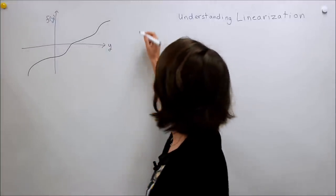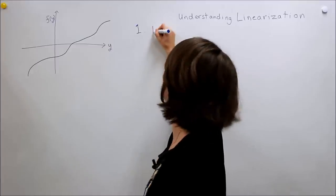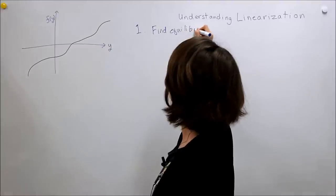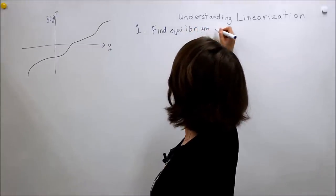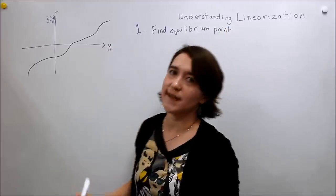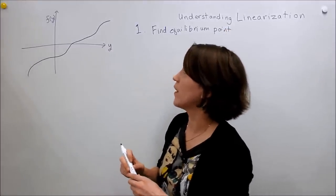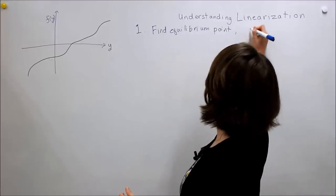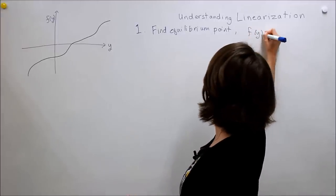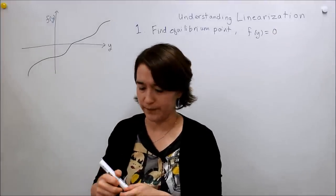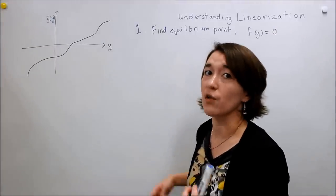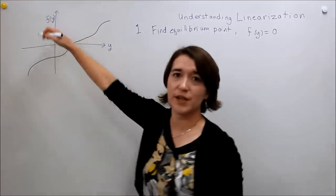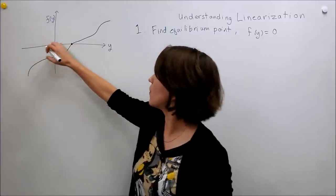The first thing we want to do is to find the equilibrium point. In any system, this means we want to find where our function f of y equals zero. So f(y) = 0 — that's the first thing we need to do. We do this because we want to linearize the function around this point. It's pretty easy to visualize: find where f(y) = 0.